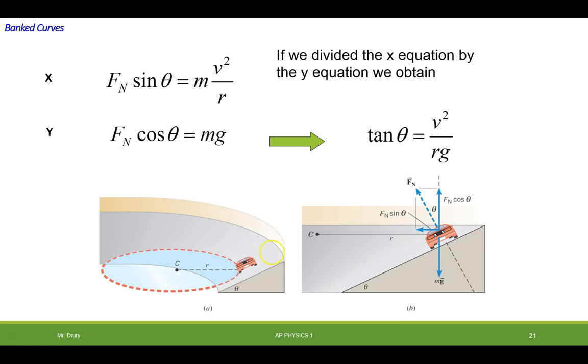Now how do we get that? Well, as you divide this by this, the force normal cancels out, sine of theta over cosine of theta is tangent. The two masses cancel out and you're left with v squared over rg.